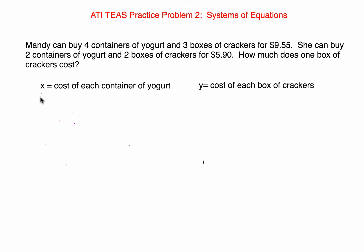Well, as you can see from the word problem, we have two unknowns. The unknowns are the cost of each container of yogurt and the cost of each box of crackers. When a word problem introduces two unknowns, we are going to do what we call a System of Equations.